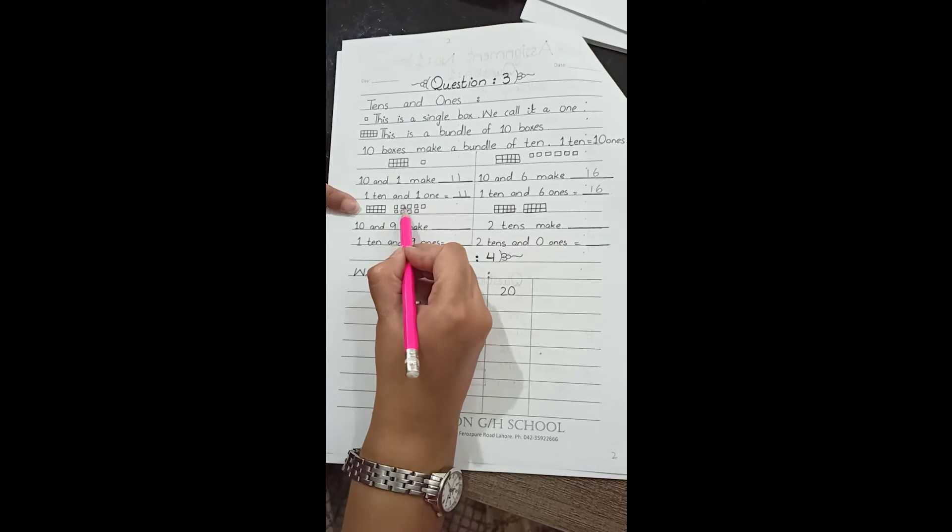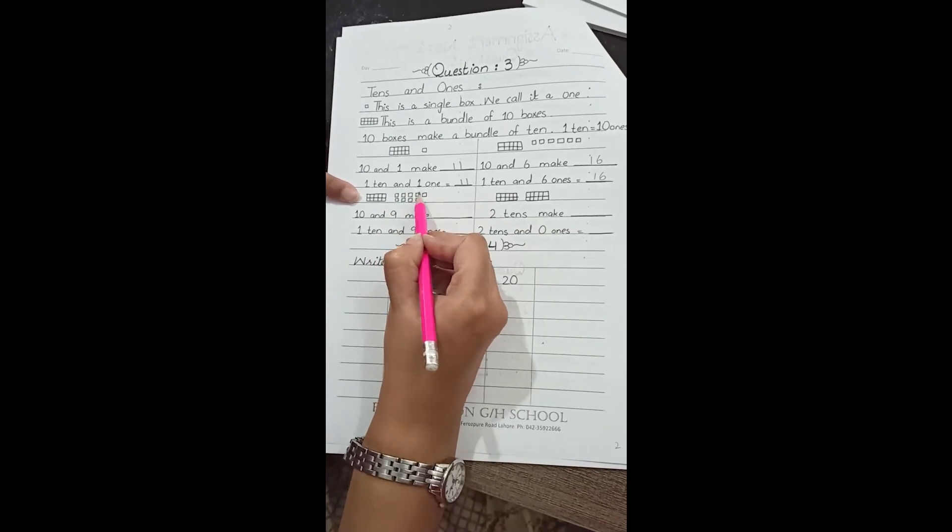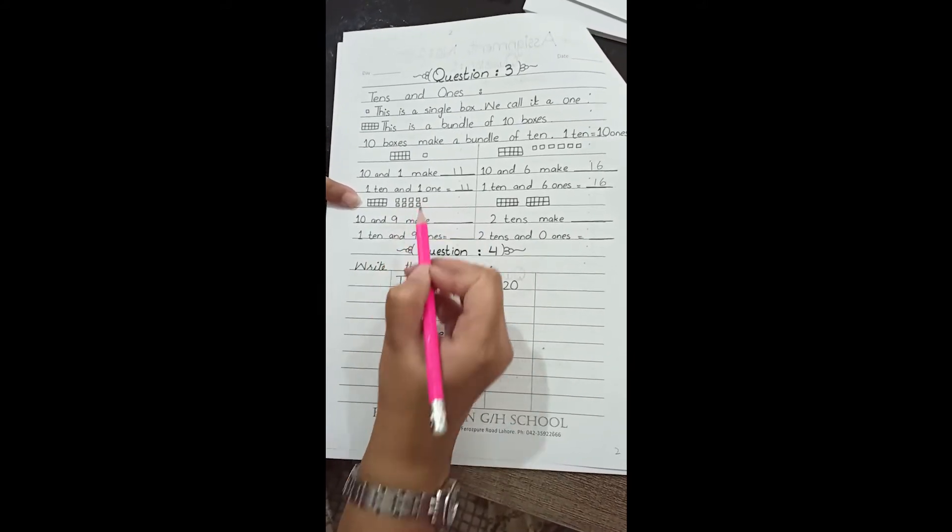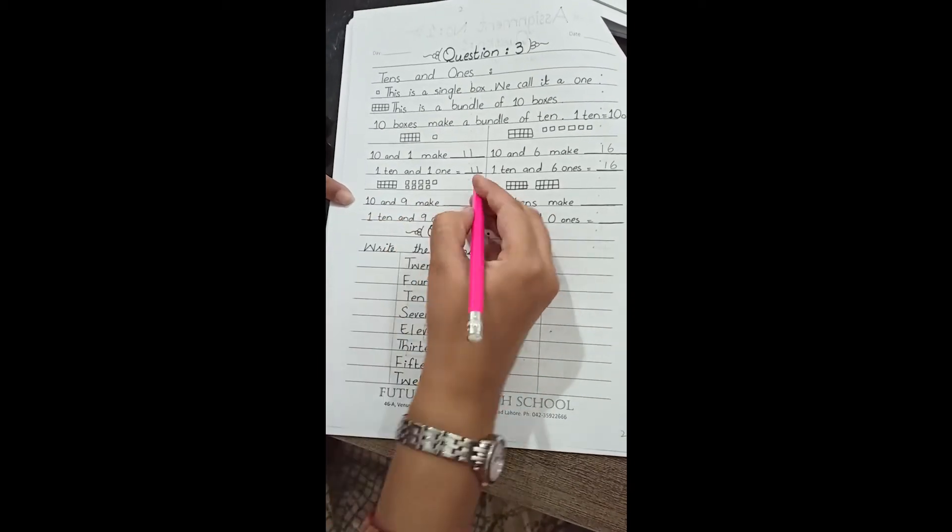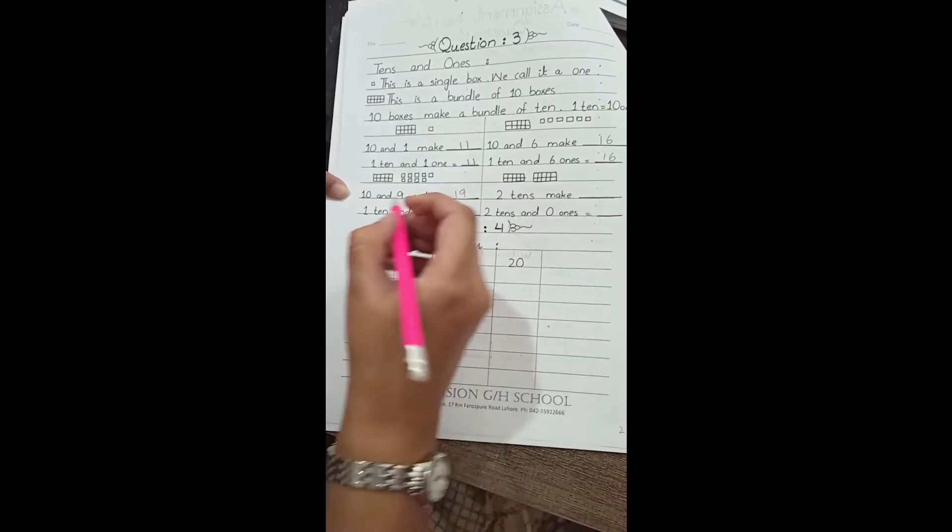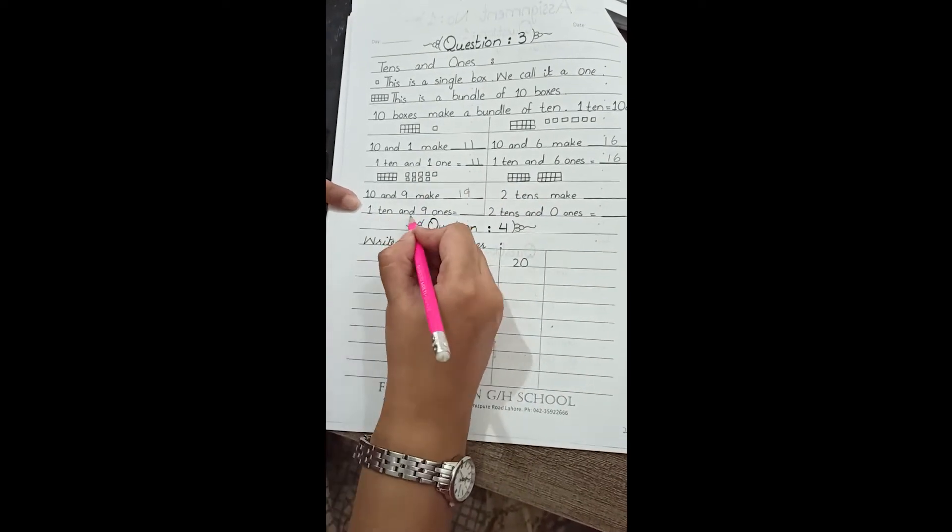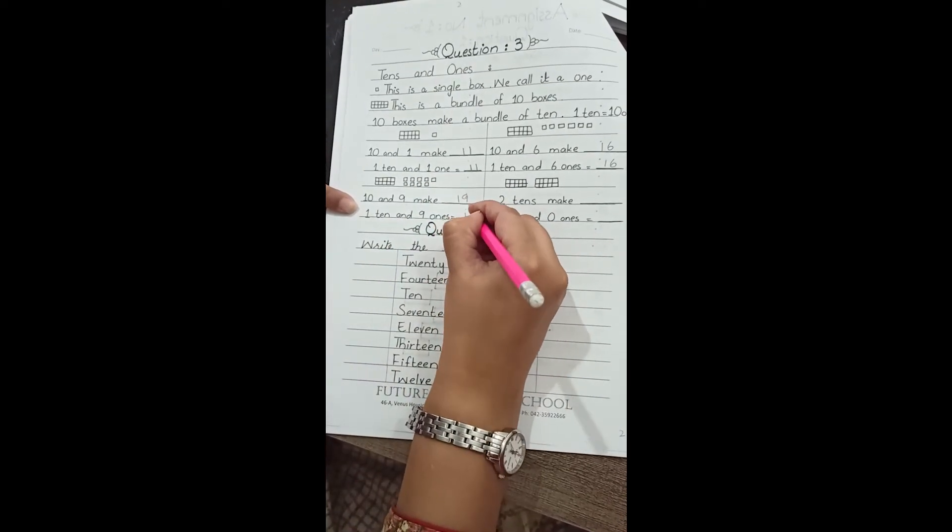Count: 1, 2, 3, 4, 5, 6, 7, 8, 9. How will this work? 10 and 9 makes 19. Similarly, 1 ten and 9 ones will be equal to 19.